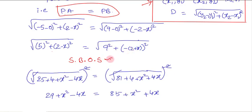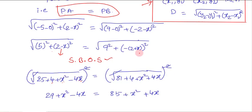Now I am applying squaring on both sides to remove the square roots. Expanding using the (a minus b) whole square formula: 5 squared is 25, and (2 minus x) squared gives 4 plus x squared minus 4x. So the left side becomes 25 plus 4 plus x squared minus 4x. Similarly, 9 squared is 81, and (-2 minus x) squared gives 4 plus x squared plus 4x.